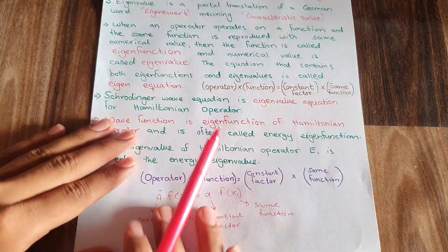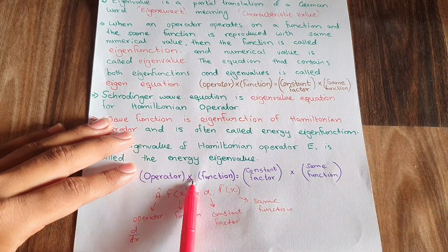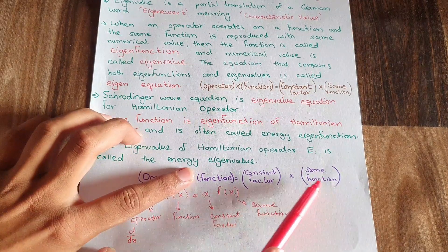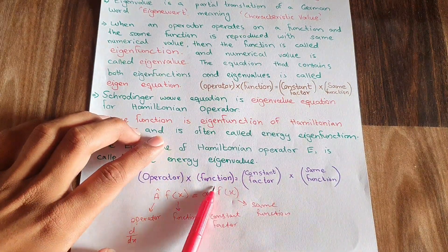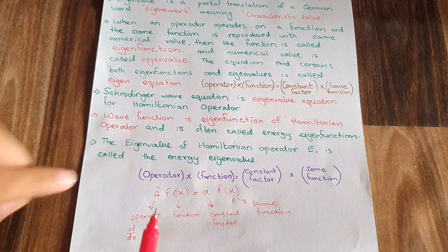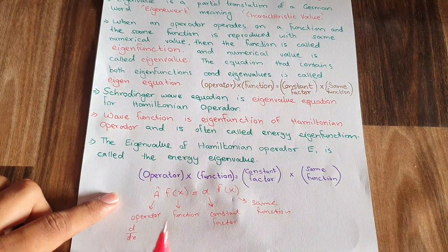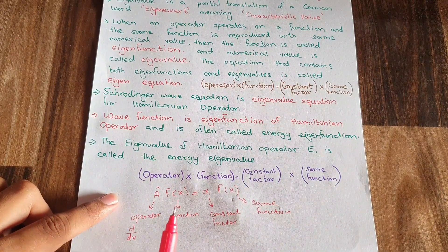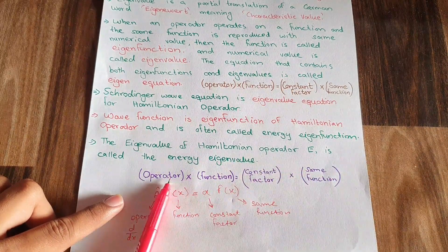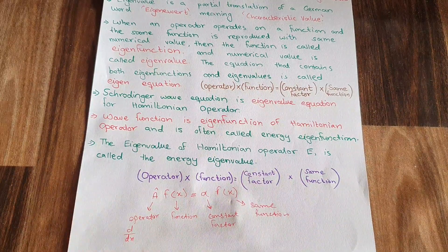First of all you need to consider a general equation: an operator multiplied by a function giving out a constant factor multiplied by the same function which was on the left hand side of the equation. If any equation follows this structure, then that equation is an eigenvalue equation. This is the general form of an eigenvalue equation.